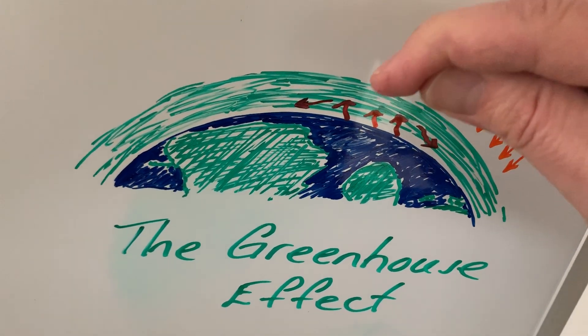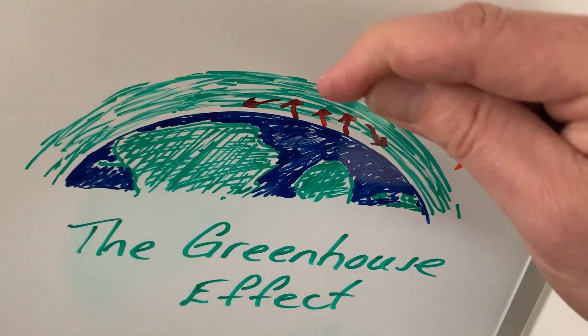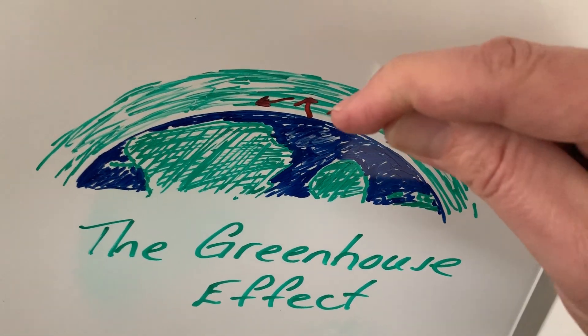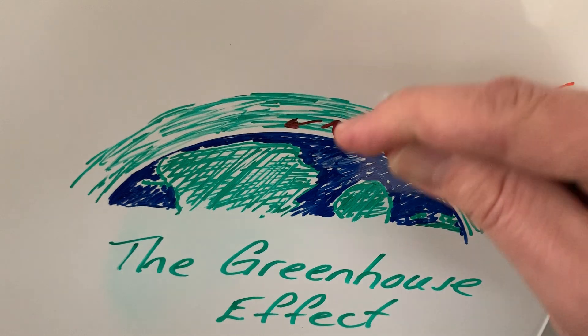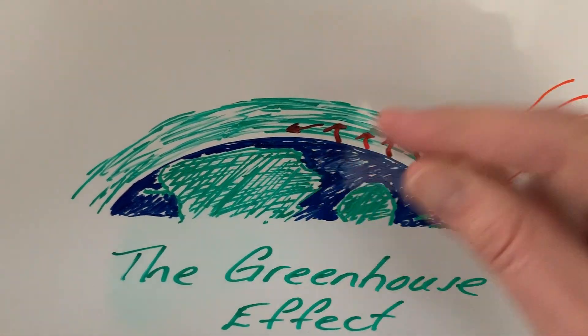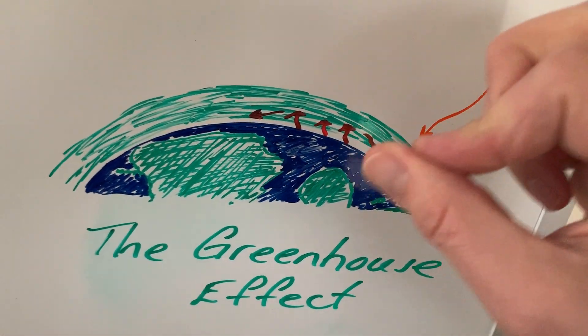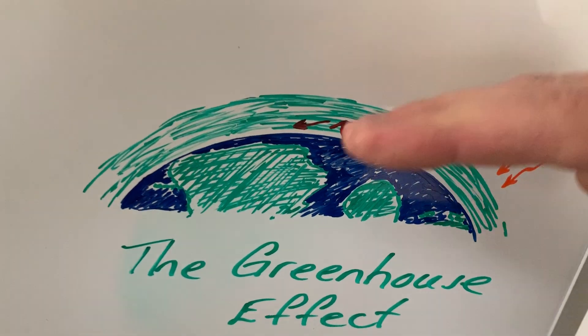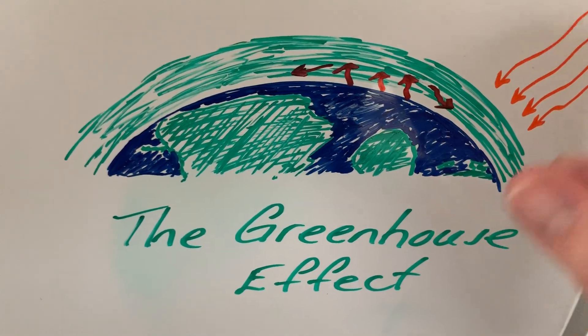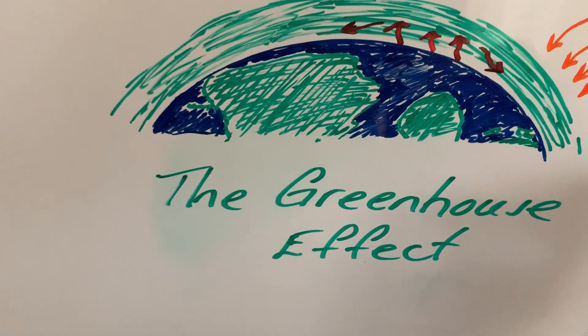Instead the carbon dioxide helps to block and redirect a lot of that heat and so the heat is not able to escape as easily. And that means that the carbon dioxide almost acts like a blanket in a way. It helps to keep the planet warmer than it would be and that is what we call, that is what we refer to as the greenhouse effect.